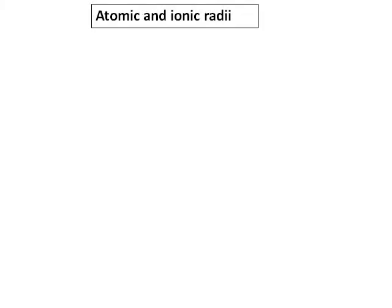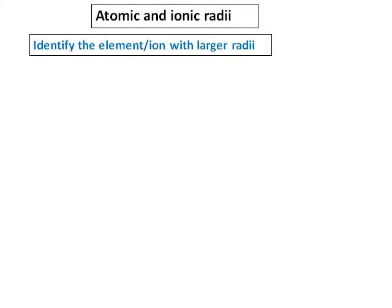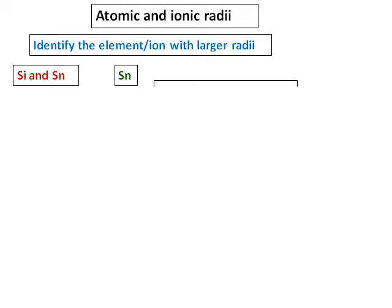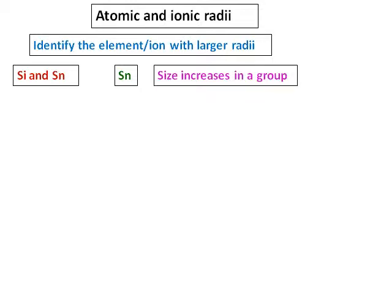Let's do some revision questions on atomic and ionic radii. You have to identify the element or ion with the larger radii — have a periodic table handy. Between silicon and tin, the larger one is tin because they belong to the same group and size increases in a group.